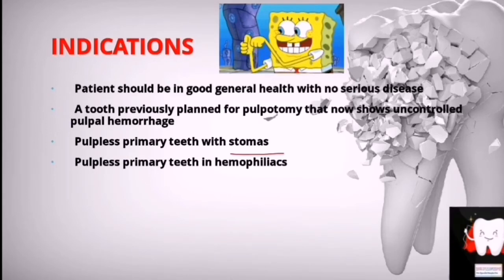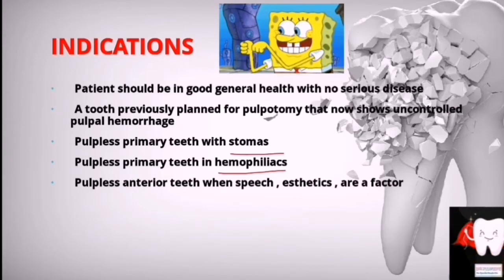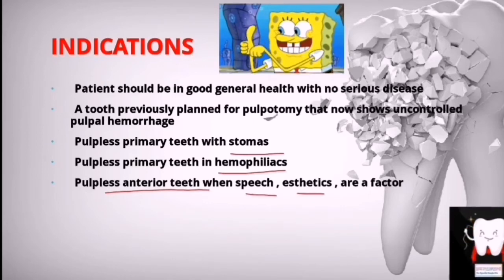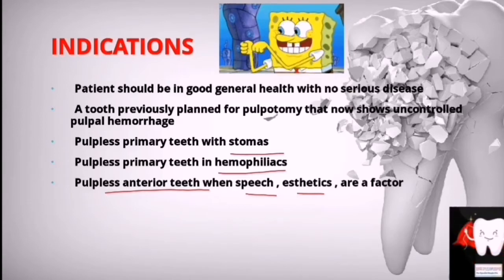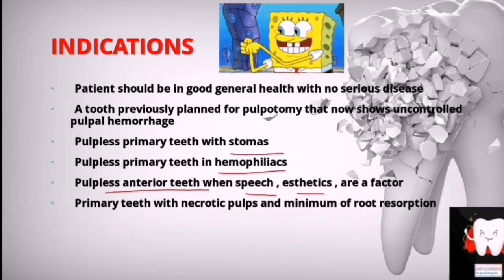Another indication is a tooth that is pulpless but with sinuses, or a pulpless primary tooth in the case of hemophiliacs where you cannot go for extraction. It can also be a pulpless anterior tooth when speech and aesthetics are a factor — you cannot extract it because if you do, speech and aesthetics will both be affected, so you maintain the tooth in the arch.